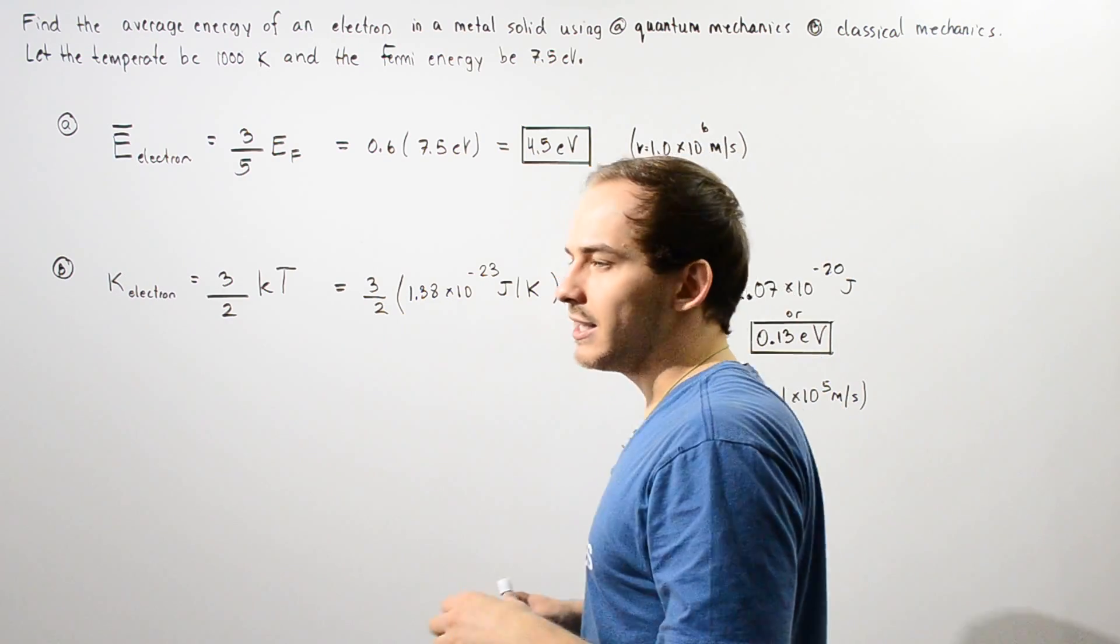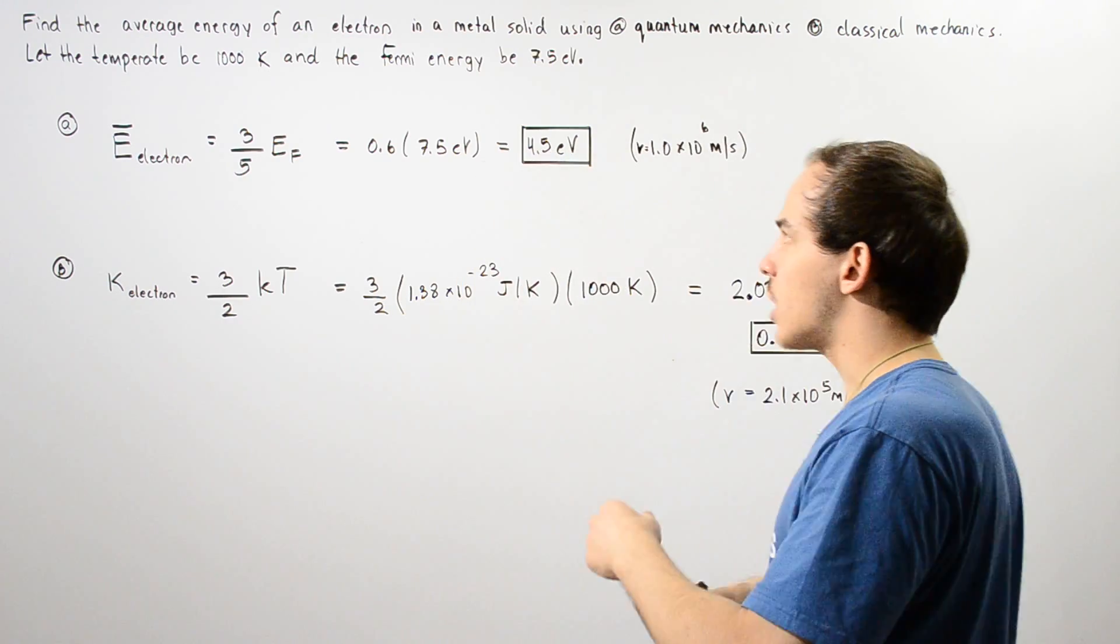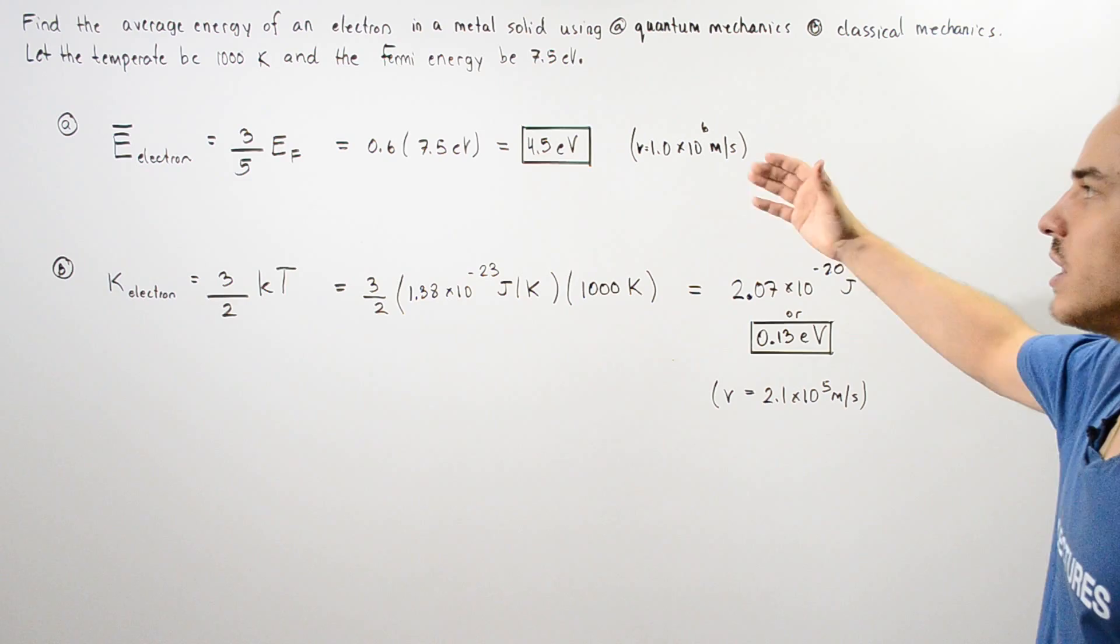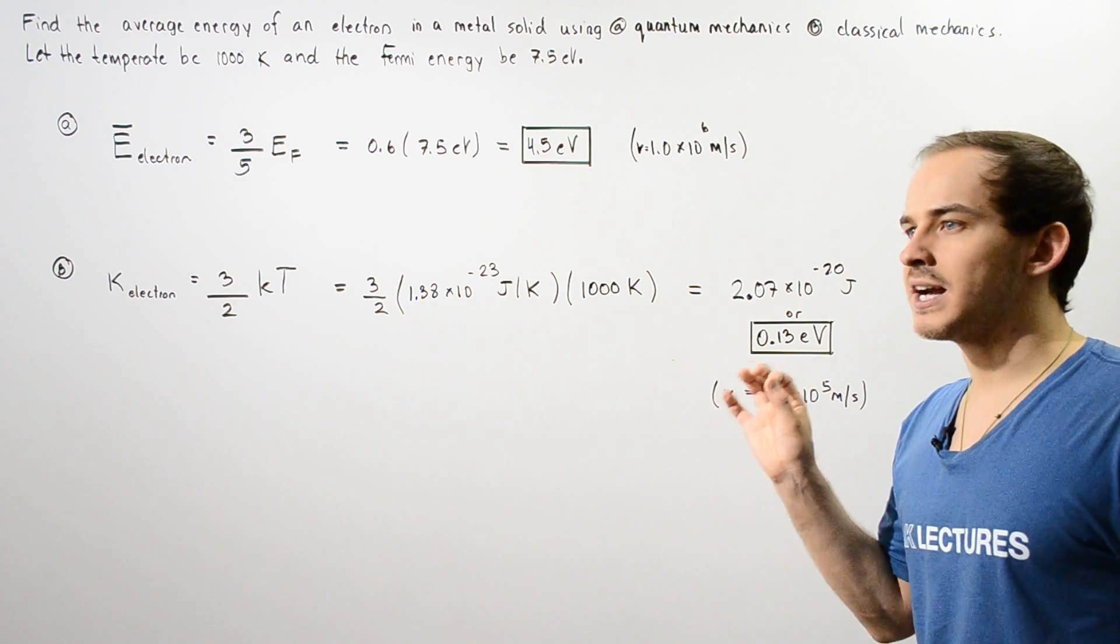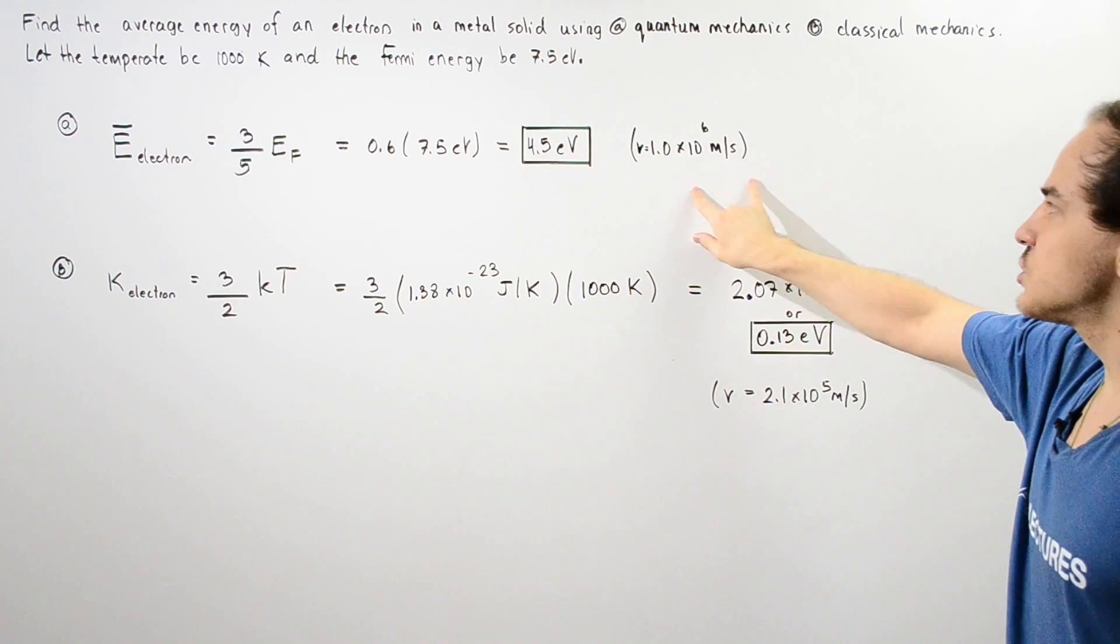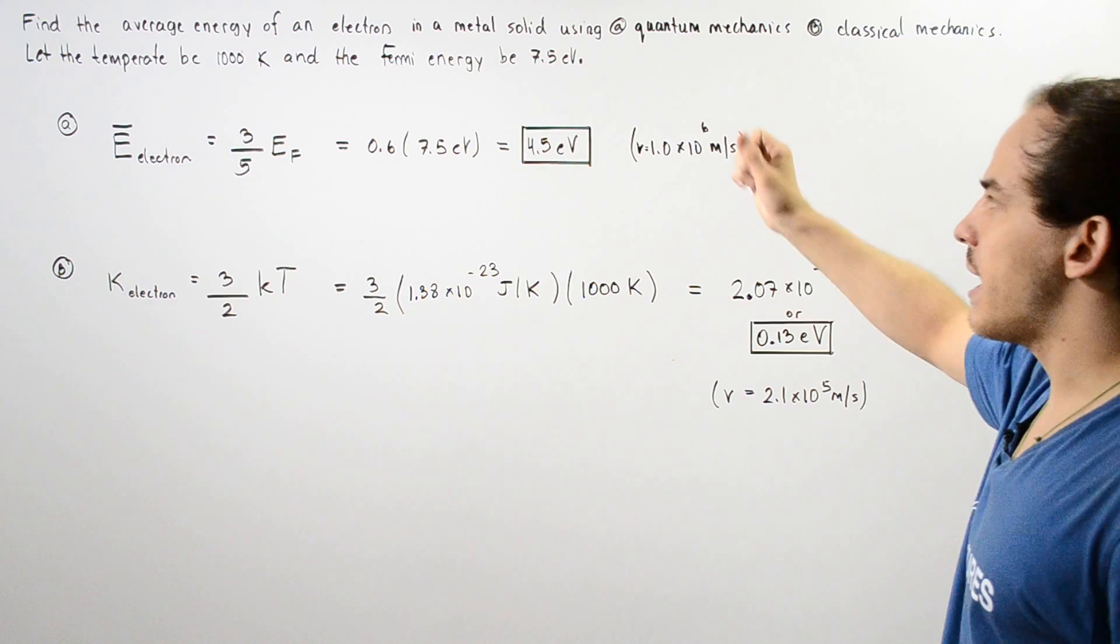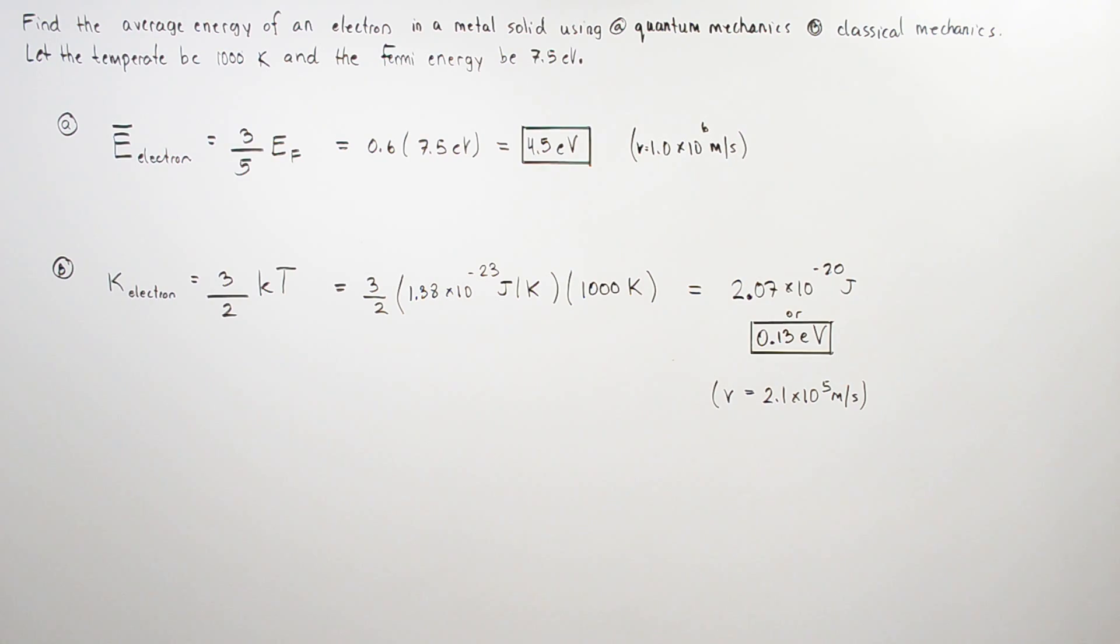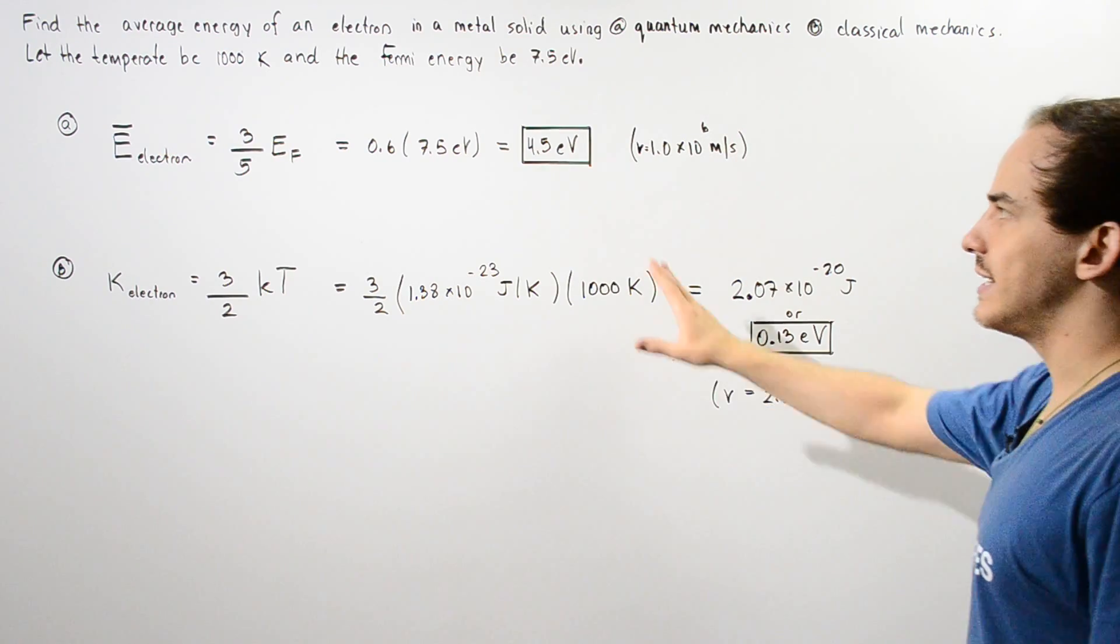Now if we want to calculate the velocity of our electron, we can do so by applying the non-relativistic kinetic energy equation. The velocity is approximately equal to 1×10^6 meters per second.